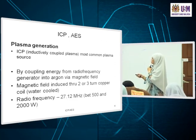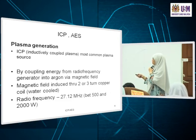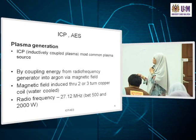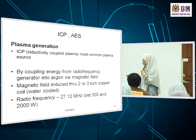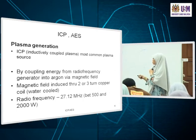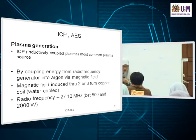The energy used is from a radio frequency generator, which couples energy into the gas via a magnetic field. There is a copper coil — a metal coil — around the top part of the torch.